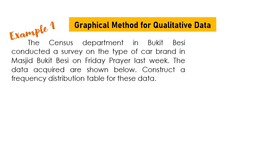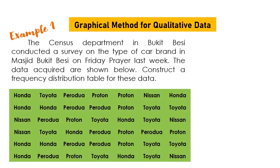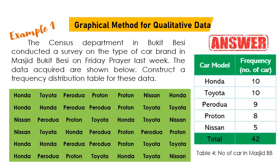Example 1: The census department in Bukit Musi conducted a survey on the type of car brand in Masjid Bukit Musi on Friday of the prior week. The data acquired are shown below. Construct a frequency distribution table for this data. The answer gives Toyota, Proton, Nissan — their total is 42.